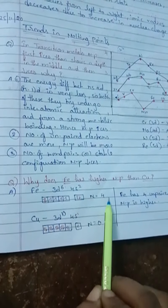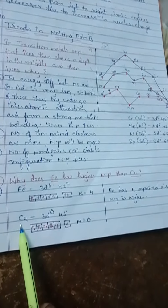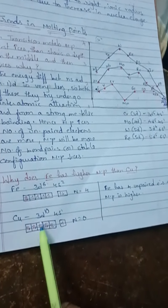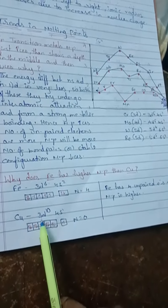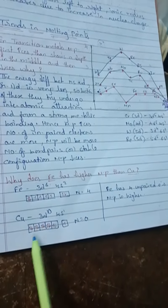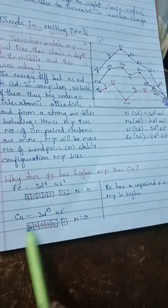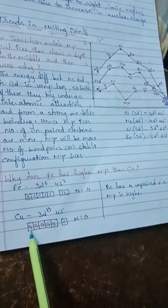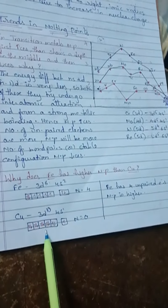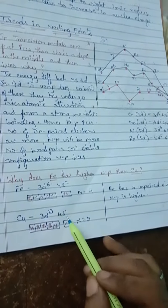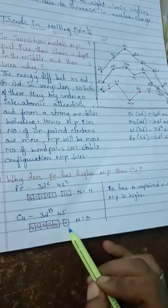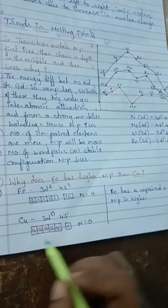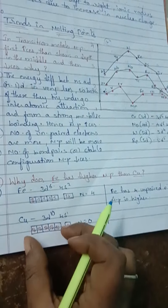When we compare to copper, its electronic configuration is 3D10, 4S1. The 3D subshell is completely filled with 10 electrons, and in the S orbital we have only one electron.